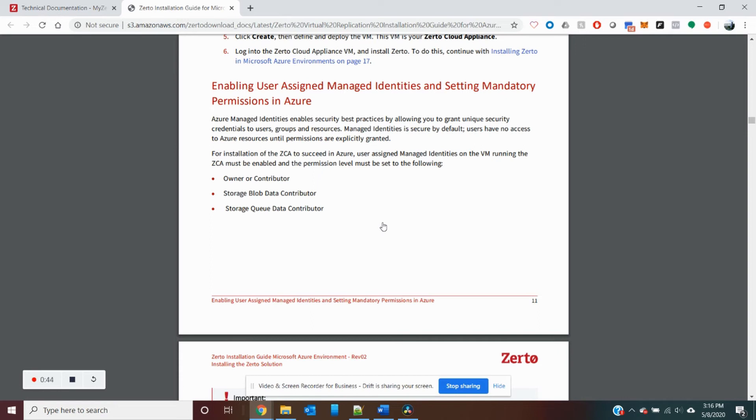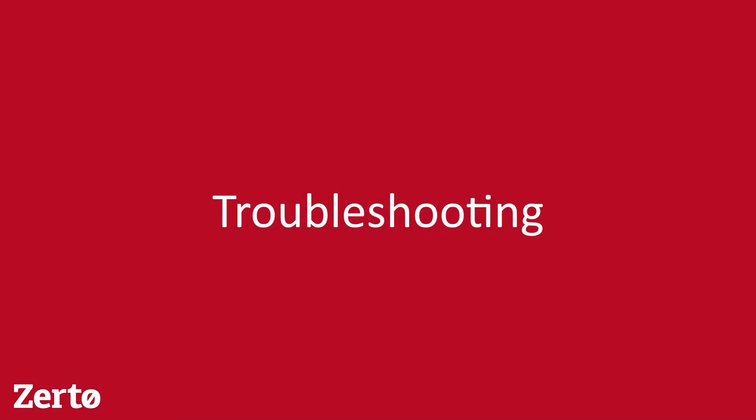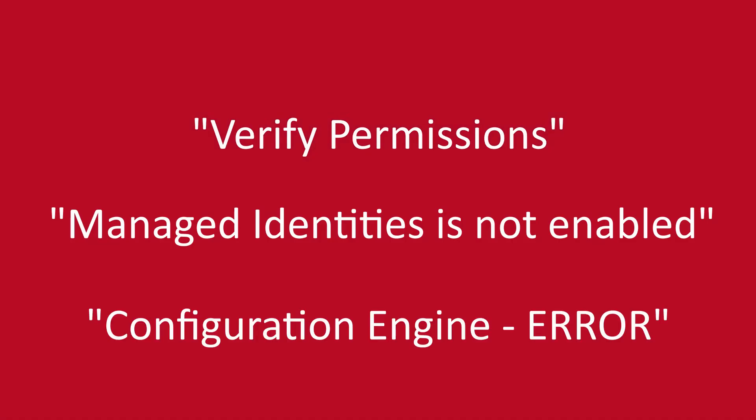Once done, you will be able to install or upgrade Zerto. The following are known errors: a managed identity has not been assigned with the correct permissions to the ZCA VM in Azure. To resolve, please go through the Zerto virtual replication installation guide for Azure to configure the managed identity.